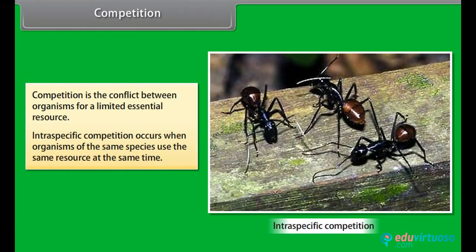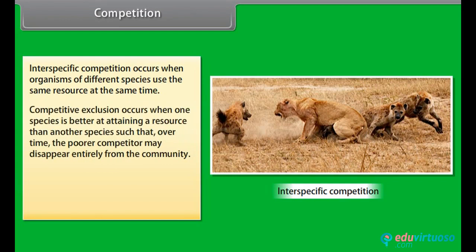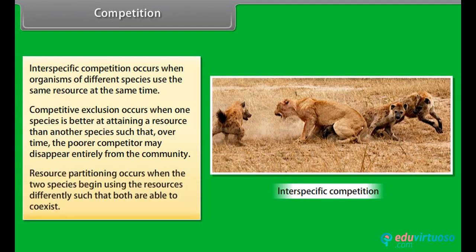Competition: Competition is the conflict between organisms for limited essential resources. Intraspecific competition occurs when organisms of the same species use the same resource at the same time. Interspecific competition occurs when organisms of different species use the same resource at the same time. Competitive exclusion occurs when one species is better at attaining a resource than another, such that over time the poorer competitor may disappear entirely from the community. Resource partitioning occurs when two species begin using resources differently such that both are able to coexist.